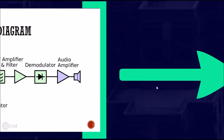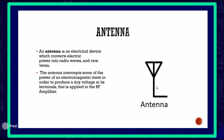The antenna is an electrical device which converts electrical power into radio waves and vice versa. The antenna intercepts some of the power of an electromagnetic wave in order to produce a tiny voltage at its terminals that is applied to the RF amplifier.